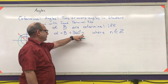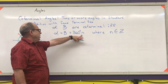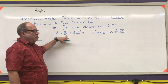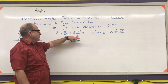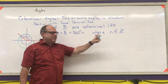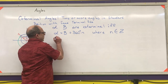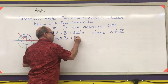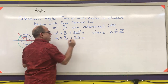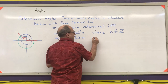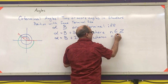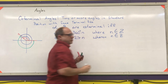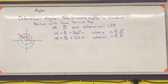n can be positive or negative — so n = 0 means alpha equals beta, n = 1 adds 360, n = -1 subtracts 360. If doing it in radians, the formula uses 2π instead of 360°, where n is still an element of the integers.